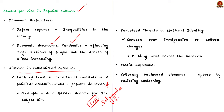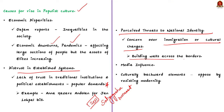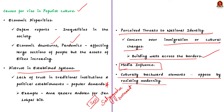Thirdly, perceived threat to national identity — in our society, there is concern over immigration or cultural change, and this can boost populist sentiments. This gets reflected in demands like building walls across borders. Finally, media influence can amplify populist messages and reach a wider audience for their vested interests. Culturally backward elements also voice popular opinions resisting modernity. These are all the causes of a rise in populist culture in our society.